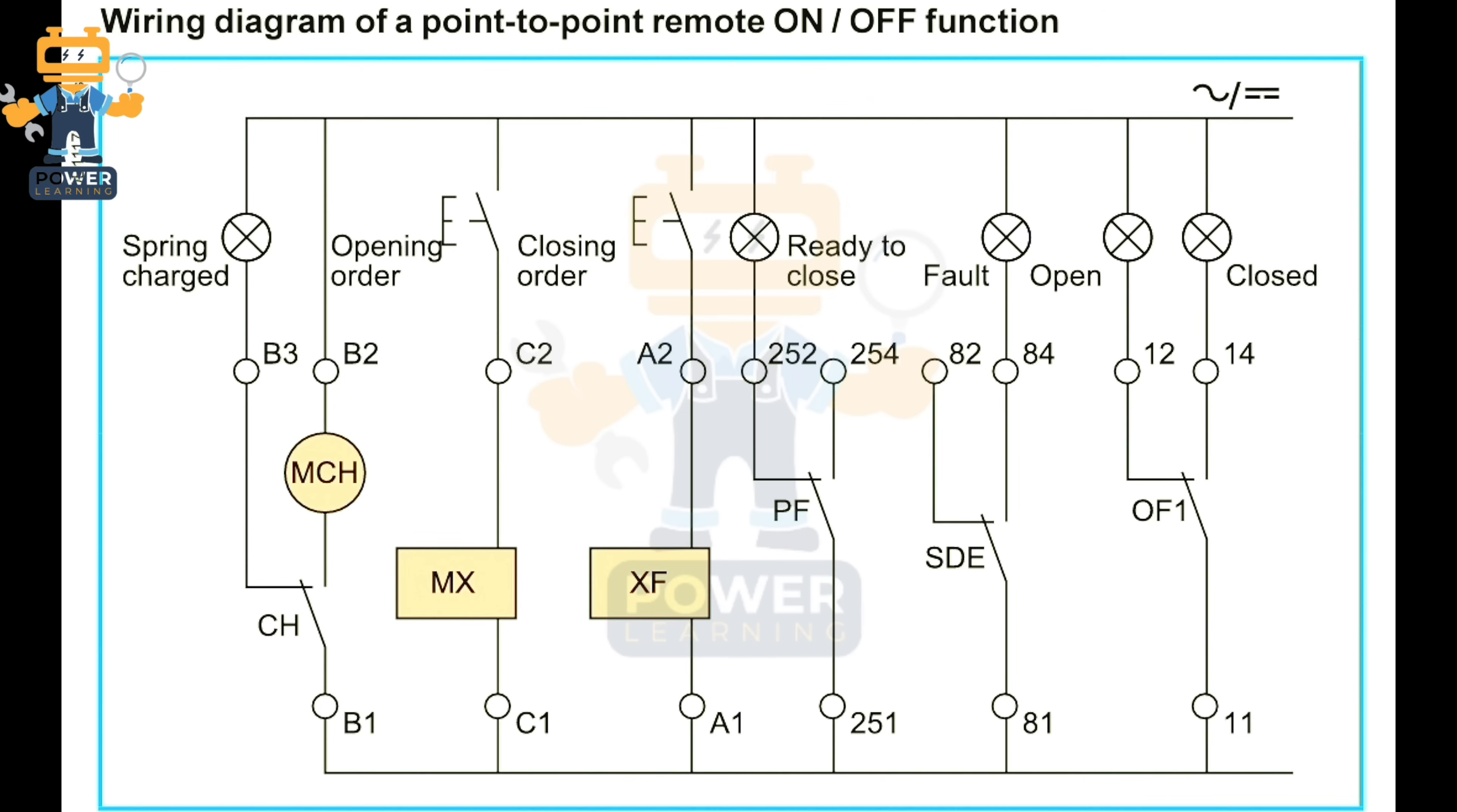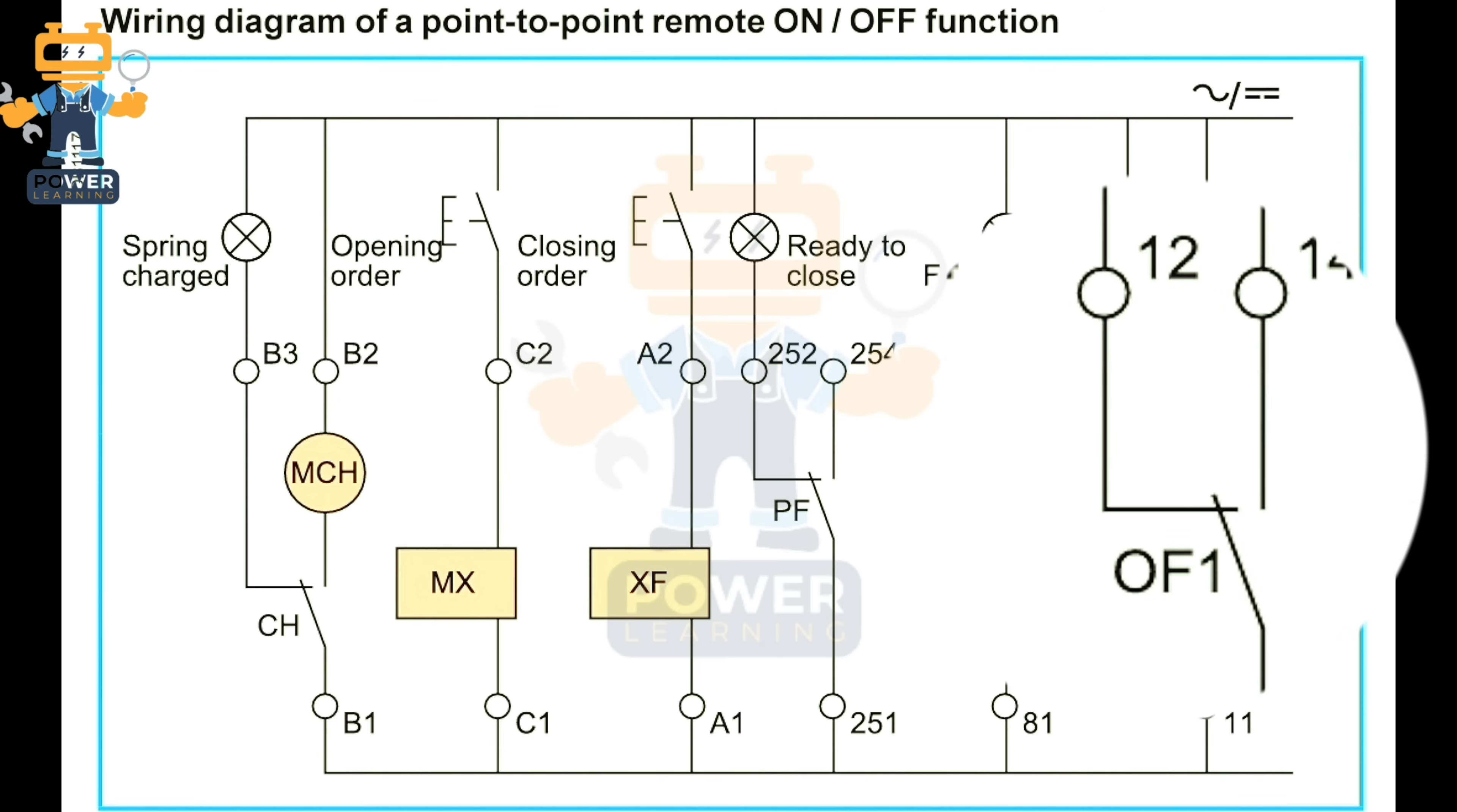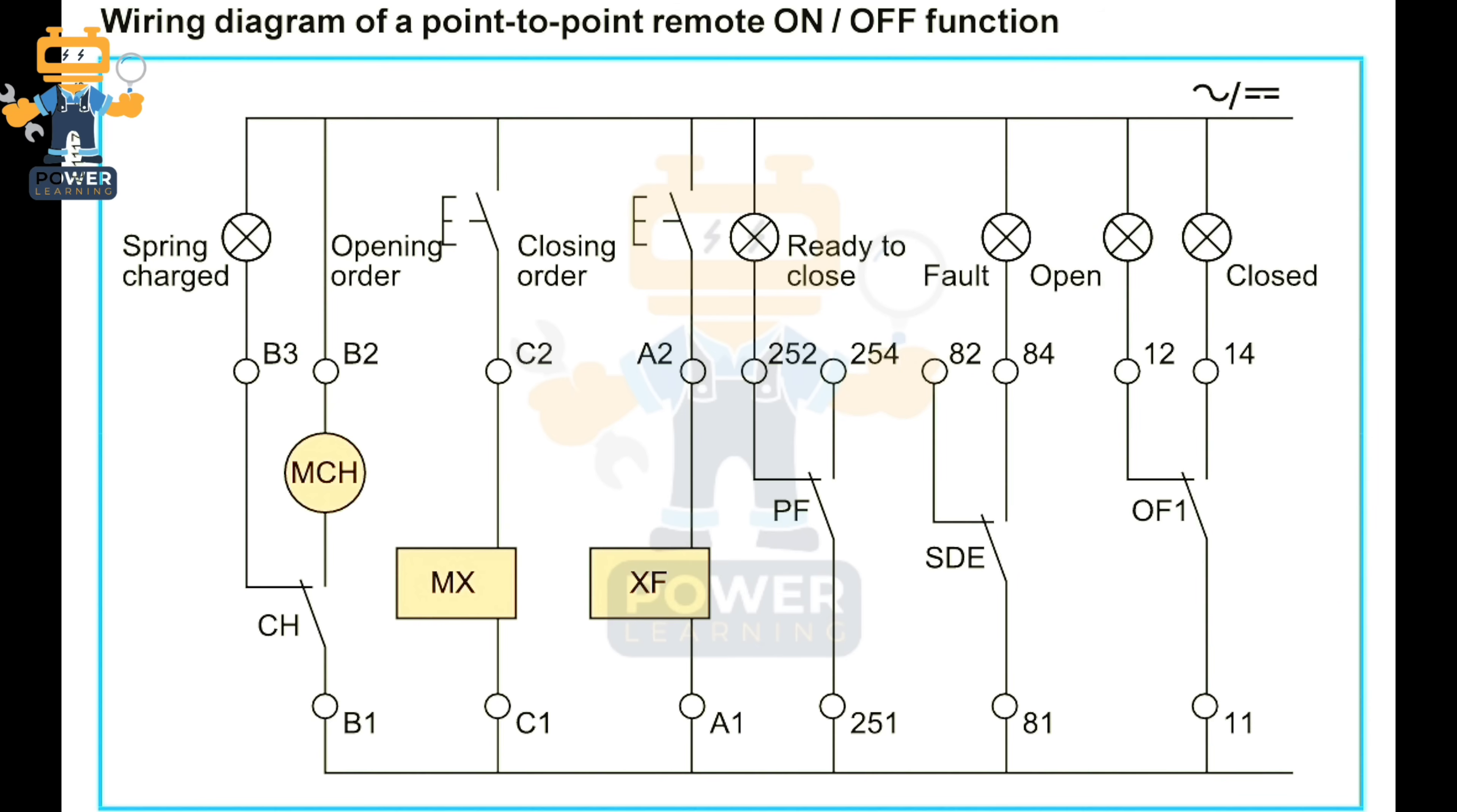Other than this we have OF1. OF1 is an auxiliary contact. Auxiliary contact we will use in many applications, but here to explain simply, we use it for breaker opening and closing status. If the breaker is open it will show us on the indication lamp that the breaker status is open. Once the breaker is closed, this normally open contact will get close with number 14, 11, and 14, so it will show the indication that the breaker is closed.